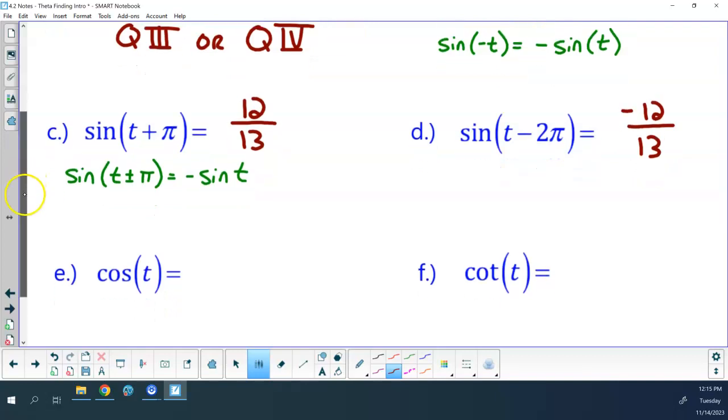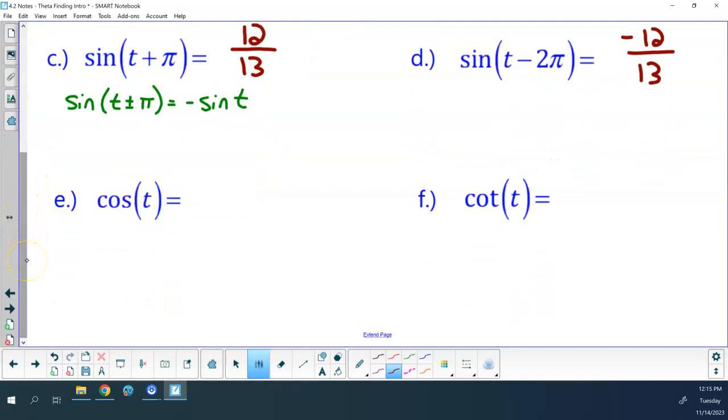If the sine value is negative twelve thirteenths, then the cosine value is plus or minus five thirteenths, depending upon if you're in quadrant three, it's negative, or quadrant four, it's positive. I will pause here for a question.